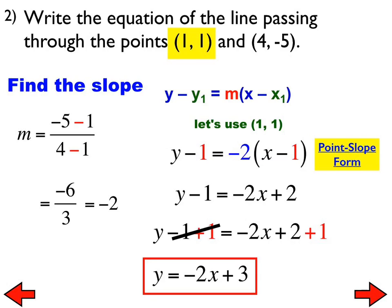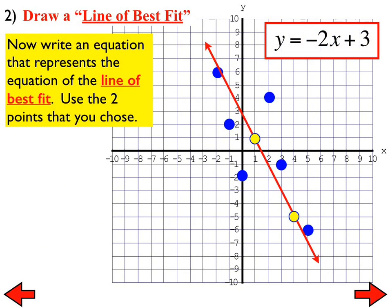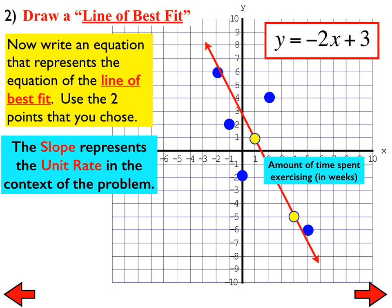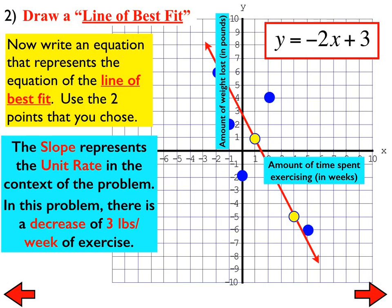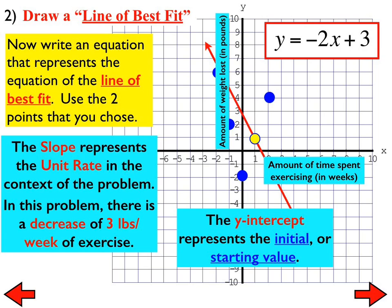So, let me put some context into what this problem could represent. So, what if I said that this is the amount of time, the x-axis represents the amount of time spent exercising in weeks, and the y-axis represents the amount of weight lost in pounds. What would our unit rate be? Talk with your shoulder partner really quickly. What would the unit rate be? Danina, what would the unit rate be? Losing two pounds per week. I don't know why it says there is a decrease of three pounds. That should obviously be two. The initial value, which is something I talked about in the last problem that we will come back to in the next lesson. The initial value is the starting value, and that always happens to be the y-intercept. So, our initial value in this one is three.